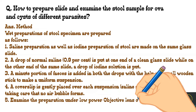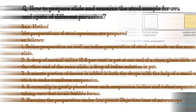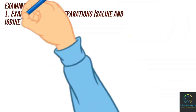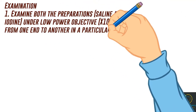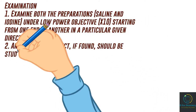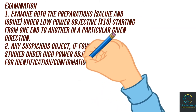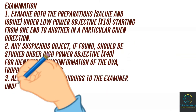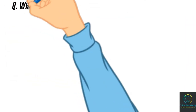Examine the preparation under low power objective lens of the microscope. Examine both preparations — saline and iodine — under low power objective (10x), starting from one end to another in a particular direction. Any suspicious object found should be studied under high power objective (40x) for identification and confirmation of the ova, trophozoites, or cysts. Always show your findings to the examiner under high power objective.